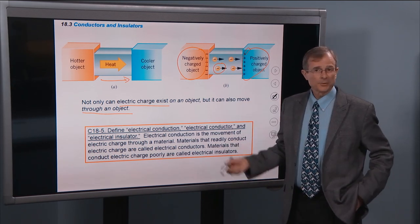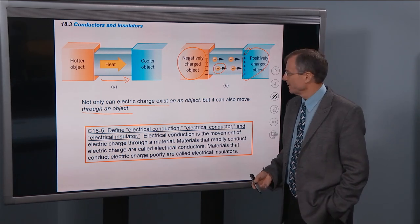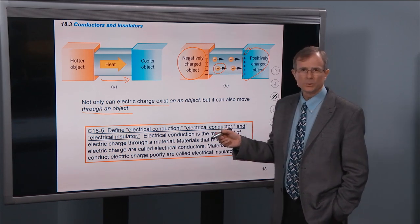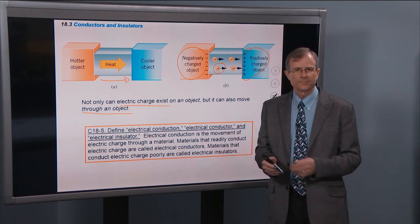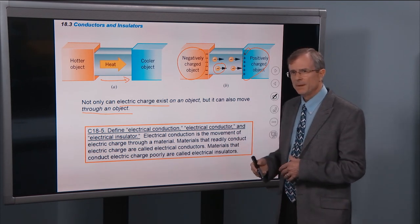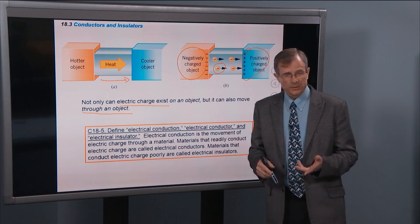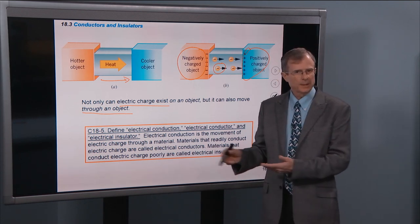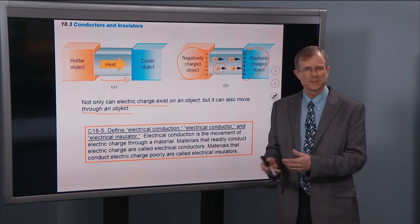So that's electrical conduction. That's what it is. And how well those electrons move is the subject of the definitions of conductors and insulators. Now, it's not only electrons that can move to create electrical currents, and we'll talk more about this in later chapters.